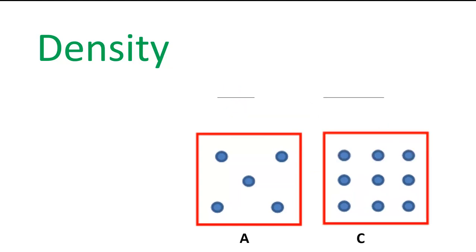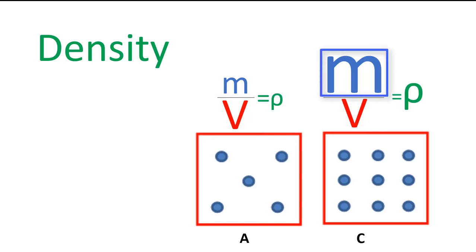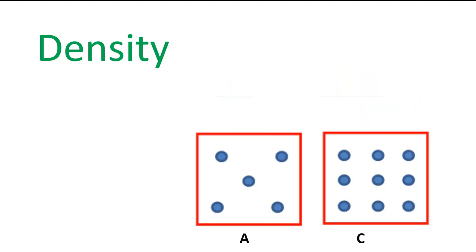What about A and C? Can you see which has a greater density? Pause the movie while you explain your answer, referring to mass and volume. C has a greater mass, as shown by more blue circles in C. Both have the same volume, represented by the same size red blocks. We know that when two fractions have the same size denominator, the one with the larger numerator has a bigger answer.